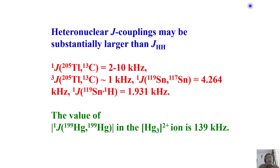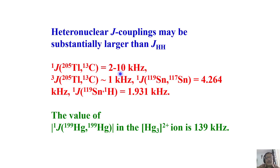Today we will deviate a little from carbon-13 to discuss some heteronuclear interactions. I want to give you a brief idea about various possible couplings. Among heteronuclear couplings, they can be very, very large. For example, a one-bond coupling between thallium-205 and carbon-13 can vary from 2 to 10 kilohertz. In a 500 MHz instrument, carbon-13 spectral width is about 30,000 to 35,000 hertz — nearly one-third to half of that spectral width is of the order of this J coupling.